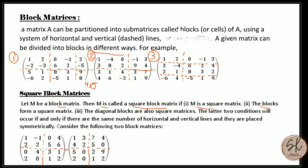Consider the following two block matrices. In example A, this is a square block matrix because each of the four blocks is a 2×2 matrix. Similarly, in the second example, all four blocks are also square matrices, making it a square block matrix as well.